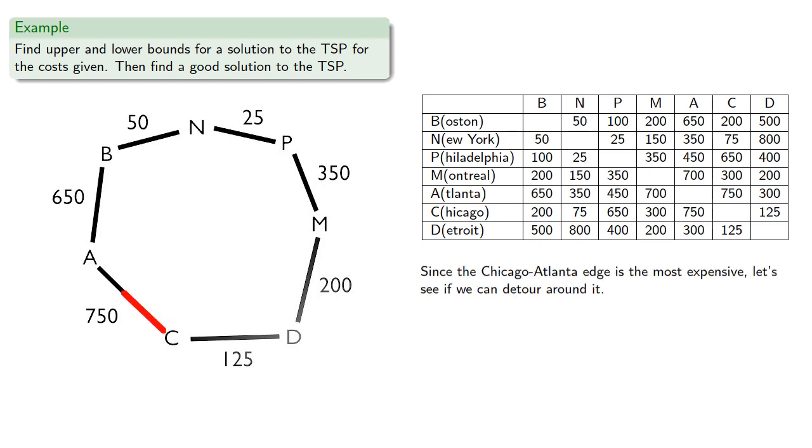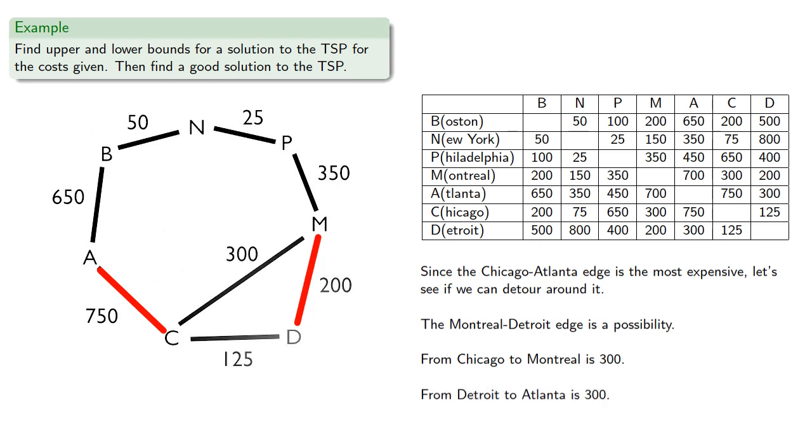Now since the Chicago-Atlanta edge is the most expensive, let's see if we can detour around it. So if we want to do this systematically, we can just look at previous edges and see what happens if we rework our network. So this Montreal-Detroit edge is a possibility. So from Chicago to Montreal is 300, and from Detroit to Atlanta is 300.